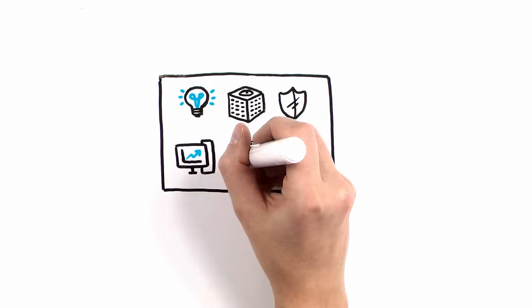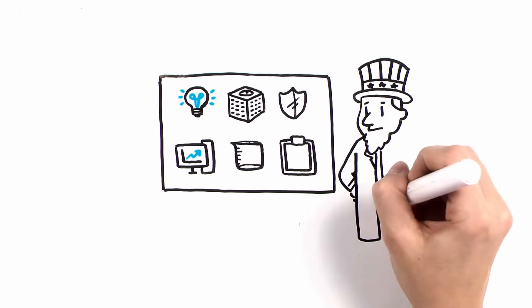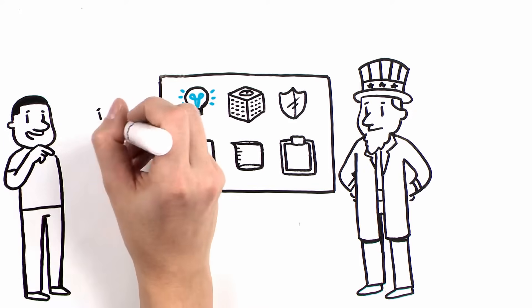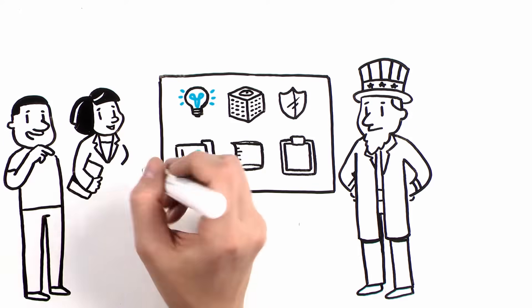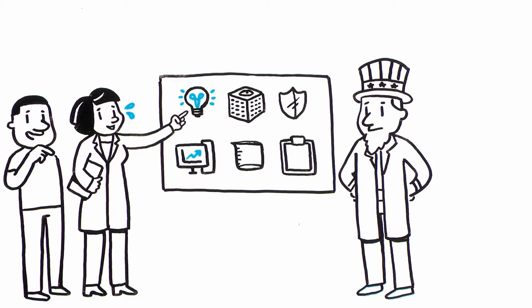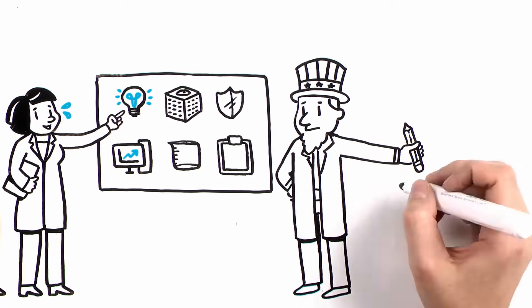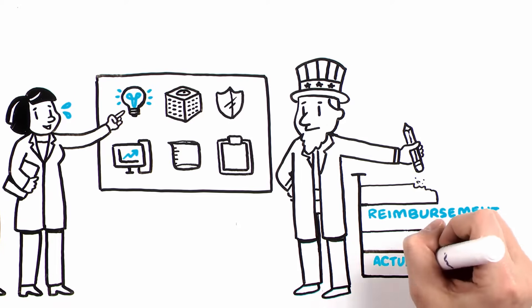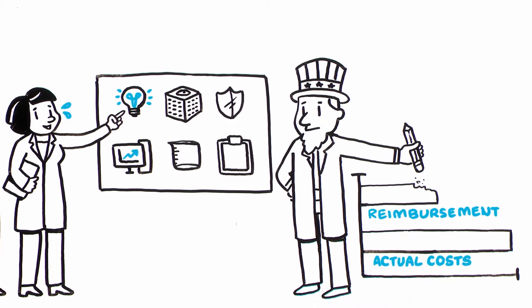This is due, in part, to an exacting F&A cost rate negotiation process with the government that requires institutions to identify and defend costs associated with federally sponsored research eligible for reimbursement. Existing government-imposed reimbursement caps on certain types of research grants and on administrative costs further erode institutions' F&A cost reimbursement rates.